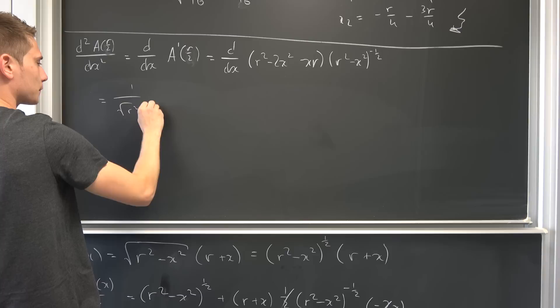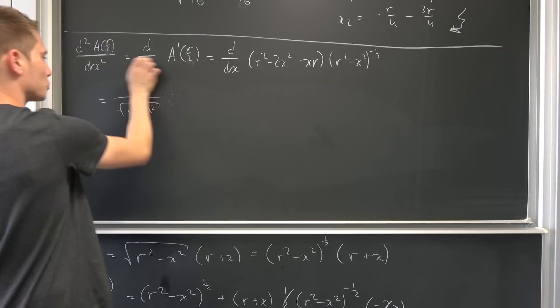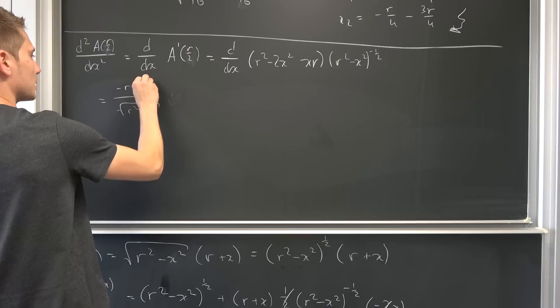So this is going to vanish, that's just the constant. This is negative r. I'm going to bring it here, so negative r and this is just negative 4 times x. So negative 4 times x.